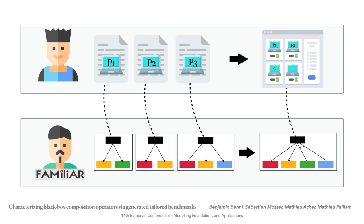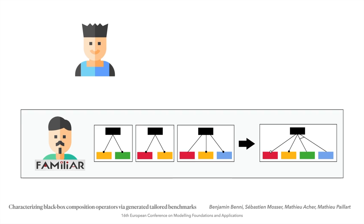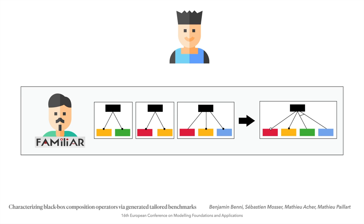So the solution for Ben's problem already exists. It has been developed by experts in the domain of variability management. But from Ben's point of view — from a user point of view — this is all opaque. The whole process is opaque. Ben sees Familiar as a service that takes a set of product descriptions and yields a feature model that represents the input set of products.